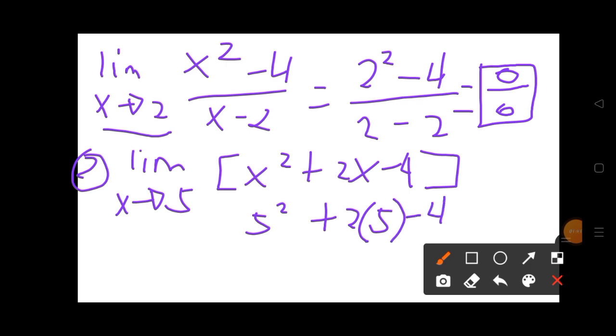So 5 times 5, it will be 25, plus 2, 2 times 5, then minus 4, that will be 31.